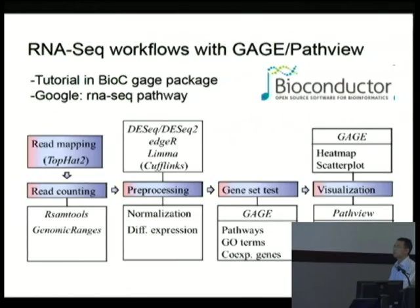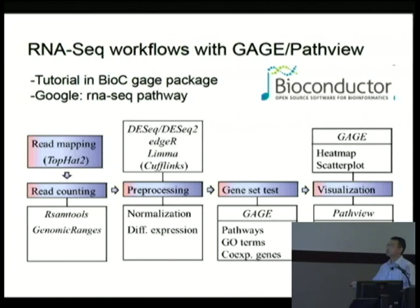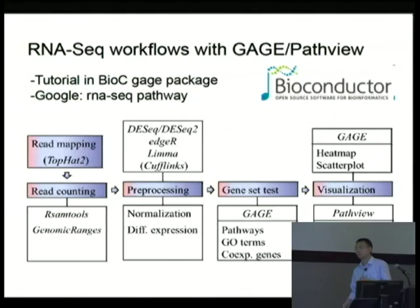You can use this workflow for pathway analysis, gene ontology analysis, as well as other types of gene set analysis. Besides, you don't have to stick to the main default workflow. You can use the joint workflow instead. You can use your favorite tools like DESeq, limma, etc. for the gene-level differential expression testing, and then feed your data into GAGE and PATH-View for gene set or pathway-level analysis and visualization.